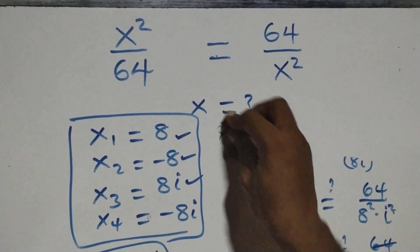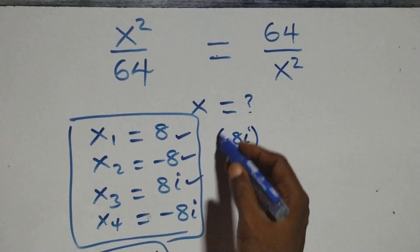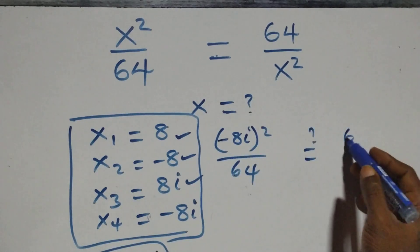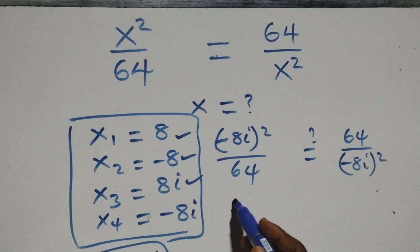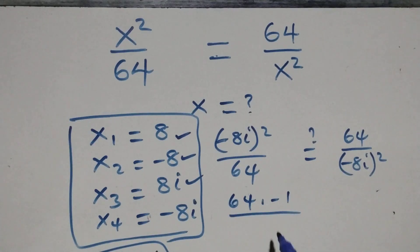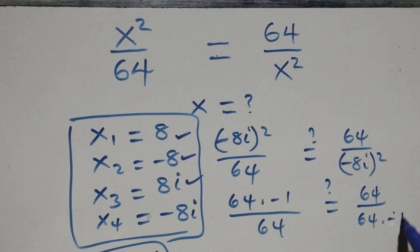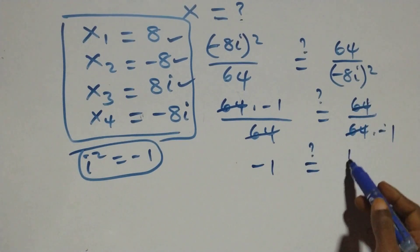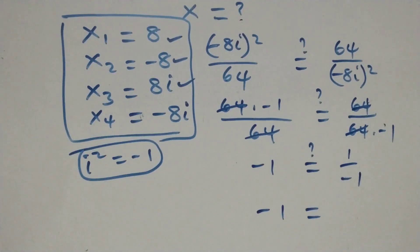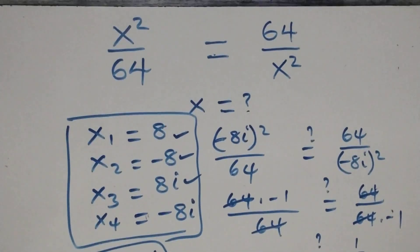Substituting x = −8i: the equation becomes (−8i)² over 64. The square turns the negative to positive and gives 64 × i² = 64 × (−1) = −64, so −64 over 64 = −1. The right-hand side is also 64 over −64 = −1. Left-hand side equals right-hand side, so x = −8i satisfies the problem. Hence we have four solutions: two real and two complex.